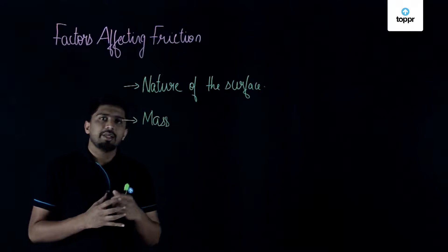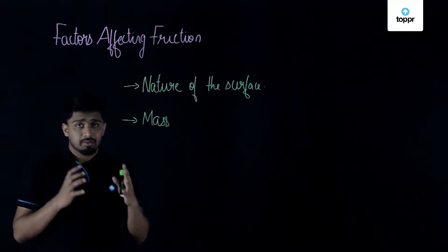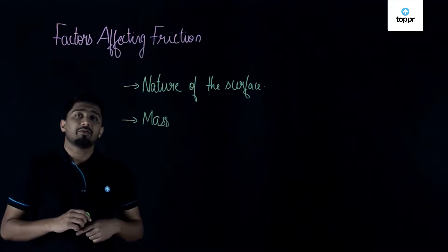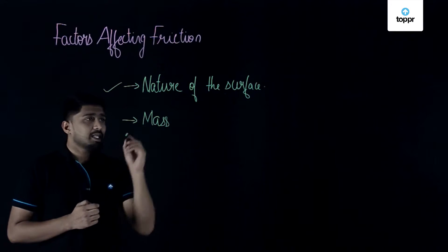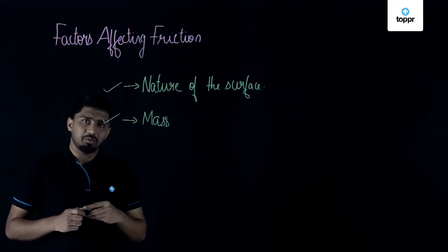So students, here in this video we have learned about the factors which affect friction. The first one is the nature of the surface and the second one is the mass of the object.